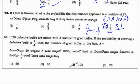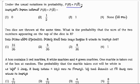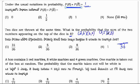Under the usual notation in probability, P(E) + P(not E) will always equal 1. Next question: Two dice are thrown at the same time. What is the probability that the sum of the two numbers appearing on top is 8? When two dice are thrown, total possible outcomes are 36. For sum of 8, favorable outcomes are: (2,6), (6,2), (3,5), (5,3), and (4,4). That's 5 favorable outcomes. So 5/36 is the answer.